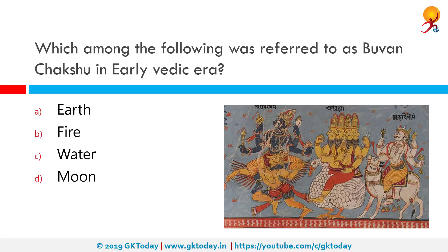Which among the following was referred to as Bhuvan Chakshu in the early Vedic era? Correct answer is fire. The Vedic period or Vedic age is the period in the history of the northern Indian subcontinent between the end of the urban Indus Valley Civilization and the second urbanization, which began in the central Indo-Gangetic plain in 600 BCE.